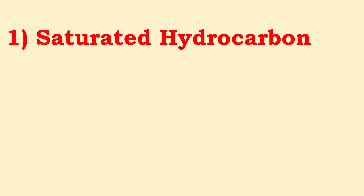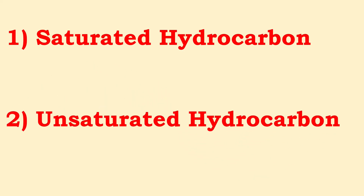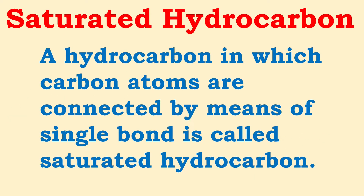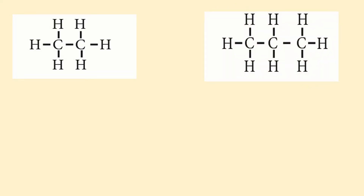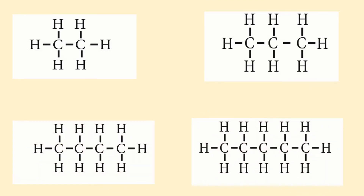It is of two types. One is called saturated hydrocarbon and another is called unsaturated hydrocarbon. What is saturated hydrocarbon? A hydrocarbon in which carbon atoms are connected by means of single bonds is called saturated hydrocarbon. This is a saturated hydrocarbon because two carbon atoms are present and they are connected by means of single bonds. Similarly, three, four, and five carbon atoms connected by single bonds are all saturated hydrocarbons.